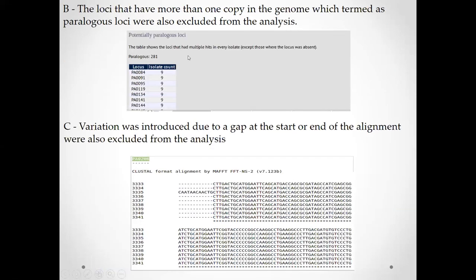Secondly, loci that had more than one copy in the genome — termed paralogous loci — are excluded. As we see in the table, this gene has nine copies. If a gene has more than one copy in the genome, we exclude it from the analysis because we cannot determine which of those nine genes the detected variation belongs to.